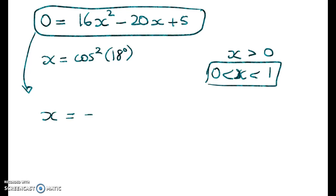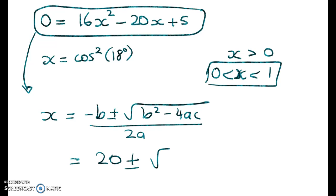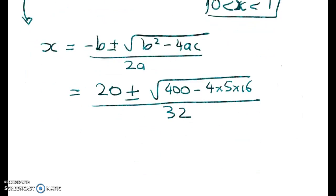All right, so we get x equals negative b. So x is equal to that. What does that give me? Well, I get 20 plus or minus the square root of 400 minus 4 times 5 times 16 divided by 32. So 2a. So when we clean that up, we have x is equal to 20 plus or minus root 80 over 32.